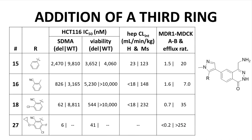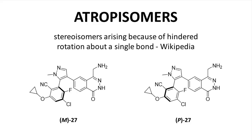Compound 27, the most active compound in the table, needs some additional discussion. Compound 27 exists as a mixture of stereoisomers, specifically atropisomers. Atropisomers are stereoisomers arising because of hindered rotation about a single bond. Normally, single bonds display free rotation at room temperature, but the adjacent substituents on the two connected rings prevent rotation about this particular C-C bond. Compound 27 was prepared as a racemic mixture with both atropisomers, which are enantiomers. The enantiomers were separated by chiral chromatography and tested individually. The researchers observed that essentially all the favorable activity seen in racemic 27 was due to the isomer on the left, M27.